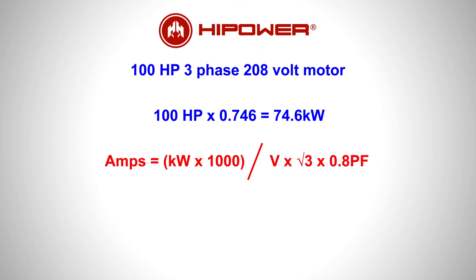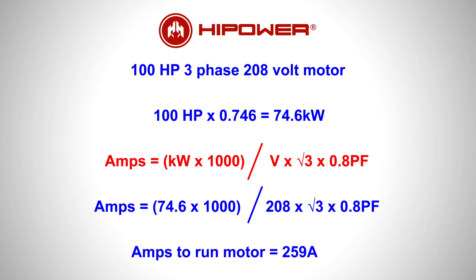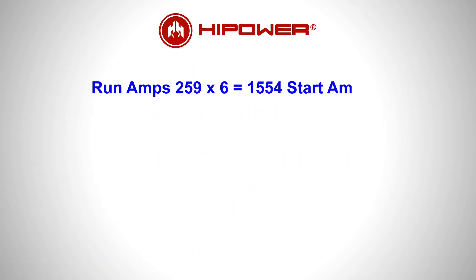The amps to run is determined by dividing the kilowatts by the volts — assuming 208 volts times root 3 times 0.8, the usual running power factor for three phase — giving a resultant running amps of 259. However, on start, the amps can be six times the running amps at 1,554 amps.